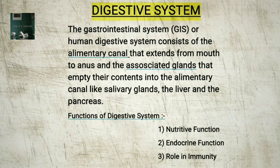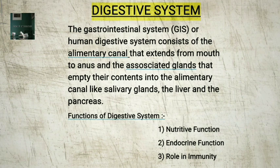The functions of the digestive system include: 1. Nutritive functions — to take in nutrients and water into the body and to eliminate wastes by the process of motility, secretion, digestion, absorption, and excretion. 2. Endocrine functions — many hormones are produced by cells of the gastrointestinal tract. 3. Role in immunity — the gastrointestinal tract is an important part of the body's immune system. The intestine has a very well developed innate and adaptive immune system.